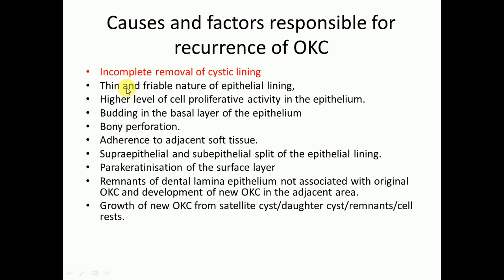Factors responsible for recurrence of OKC include: incomplete removal of the cystic lining due to its thin and friable nature; higher levels of cell proliferative activity in the epithelium; budding in the basal layer; bony perforation; adherence to adjacent soft tissues; supra- and sub-epithelial splitting of the epithelial lining; parakeratinization; remnants of the dental lamina epithelium not associated with the original OKC; development of new OKC in adjacent areas; and growth from satellite cysts, daughter cysts, or remnant cell rests.